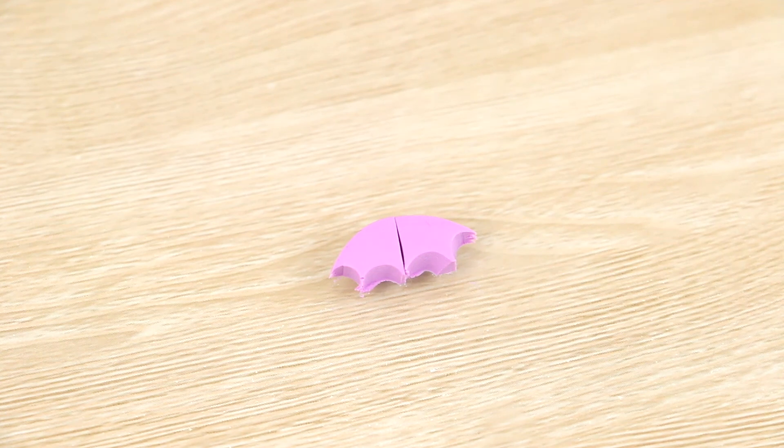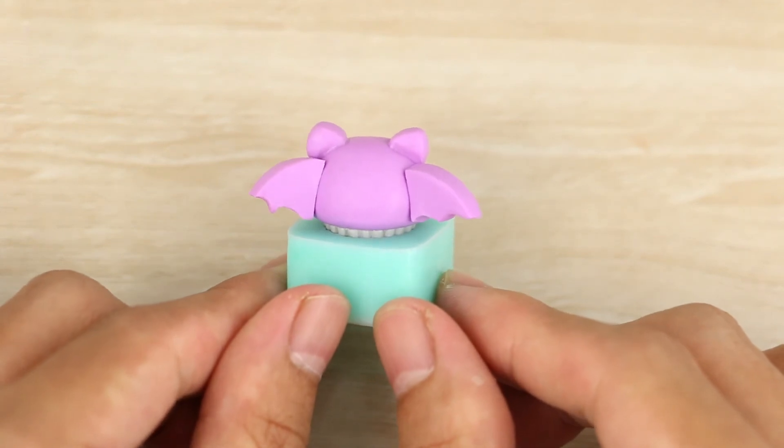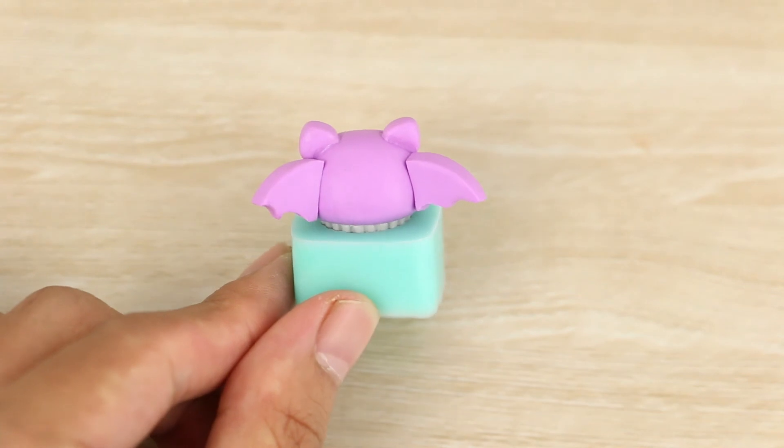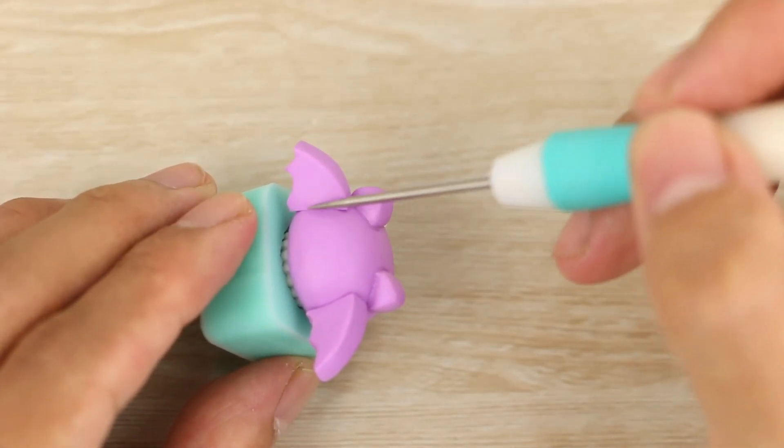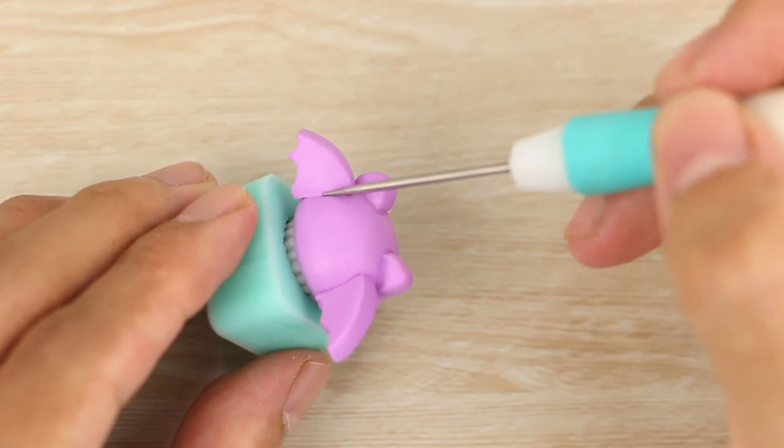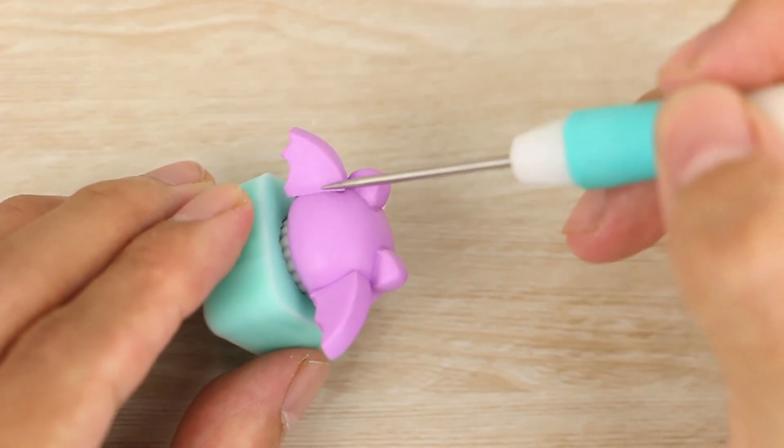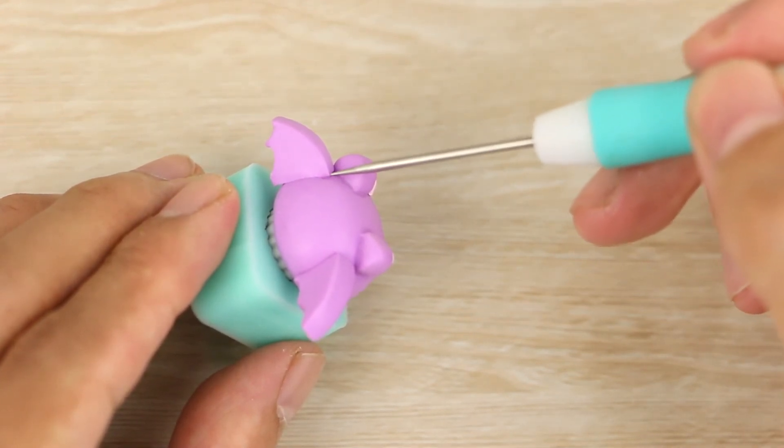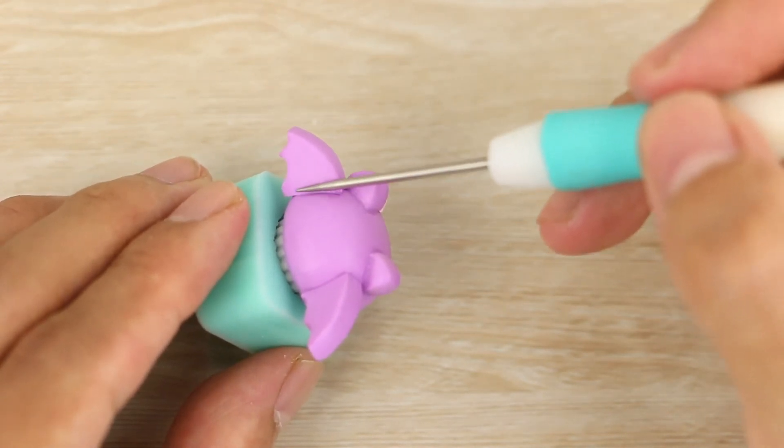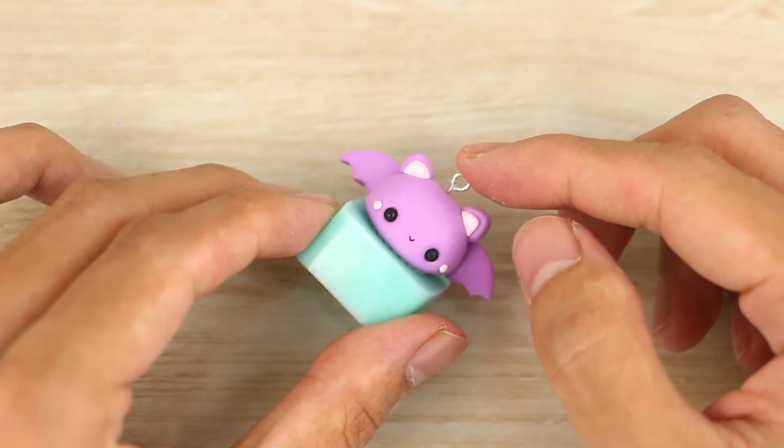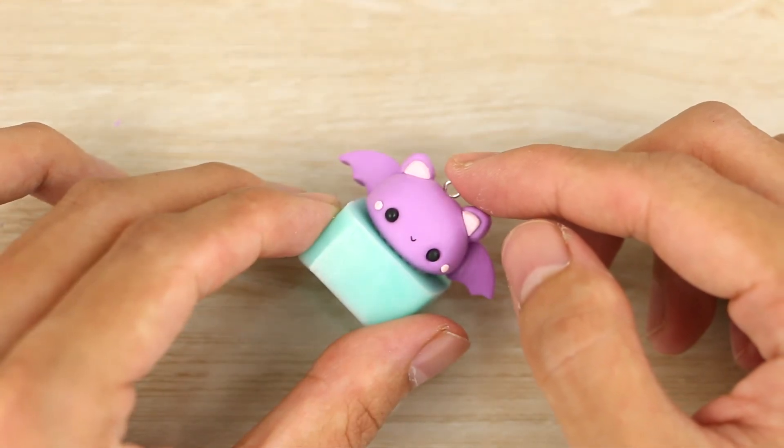I've then placed these onto the back of the bat's head sort of more towards the side so that it sort of fans out, and then smoothing the edges to the head. And then lastly I've added the face and then putting in an eye pin to turn it into a charm.